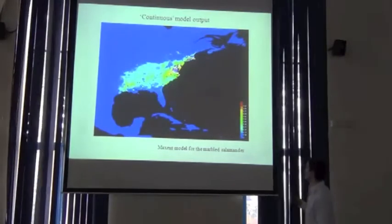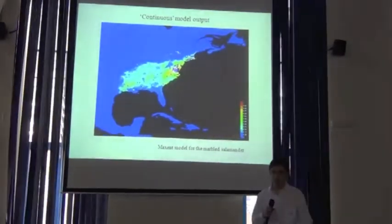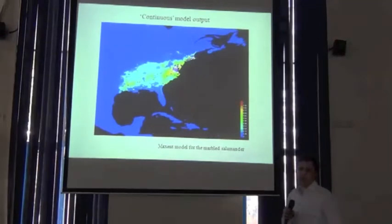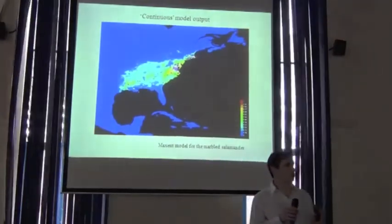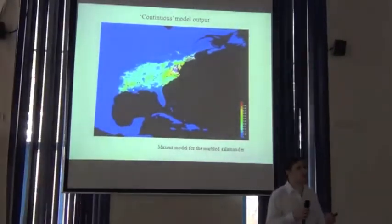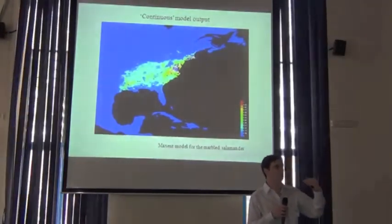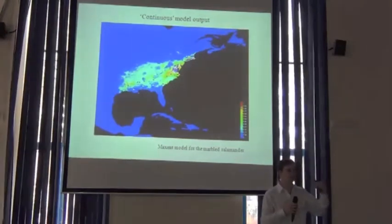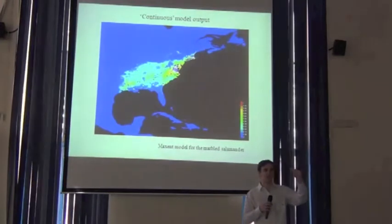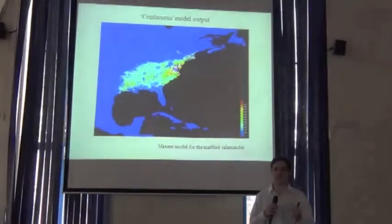Here's a classic example of a result that you might get. This is for a salamander in North America that we had a quick go at. The question is how might we — and I'll come on to why — turn this into a binary prediction of present or absent? We need to set some sort of threshold that says: above a certain value of prediction, we're going to say the environment is suitable or within the ecological niche, and below that value, we're going to say the environment is unsuitable, outside the ecological niche.